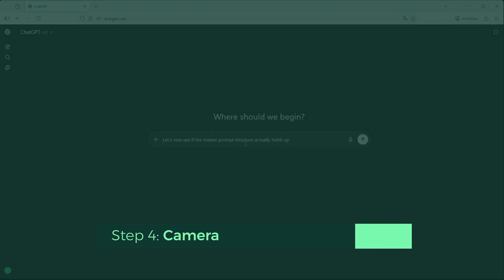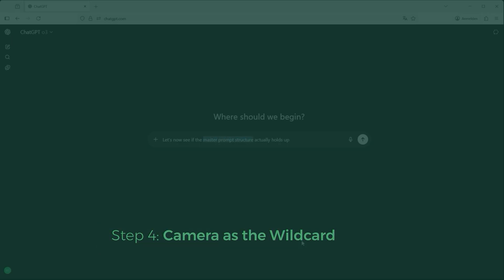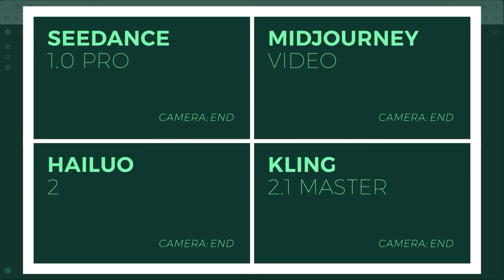Let's now see if the master prompt structure actually holds up. For this test I used four platforms: C-Dance Pro (top left), Mid-Journey Video (top right), Hilo 2 (bottom left), and Kling 2.1 Master (bottom right). I kept the camera instruction at the end of the prompt for all three test scenes. You'll also notice how each platform deals differently with the same input and how that affects the final result.